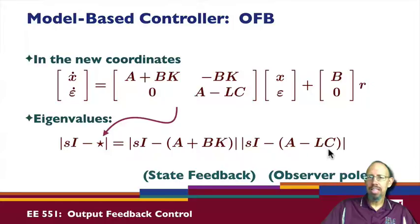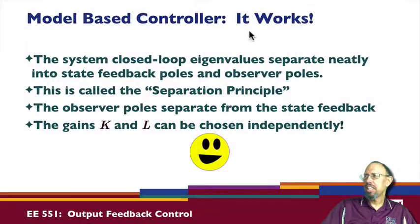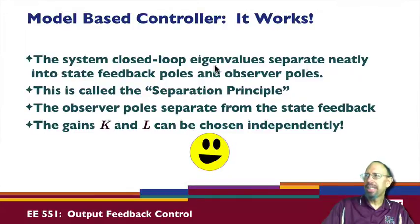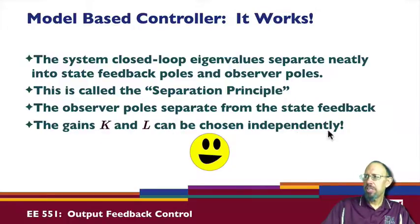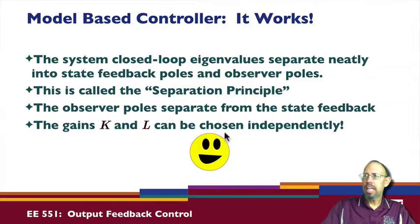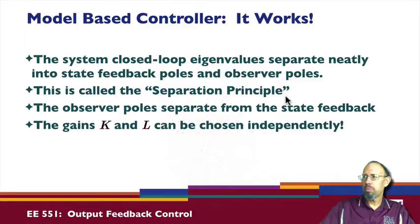The overall eigenvalues for the system are the eigenvalues of the state feedback portion (involving the state feedback gain K) and the observer pole portion (involving the observer gain L). So it works! The closed-loop eigenvalues separate neatly into the state feedback poles and the observer poles. This separation is called the separation principle.